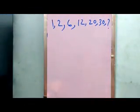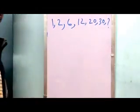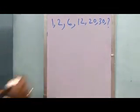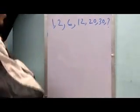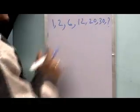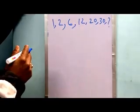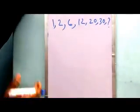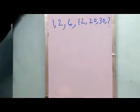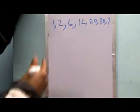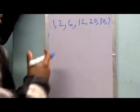Good evening guys, today I am here for another session of number series completion test. Let's do our work now — just see the number series drawn over the board here. We have to find the particular missing number. What will be the logic to find the missing number? I am going to show it here.